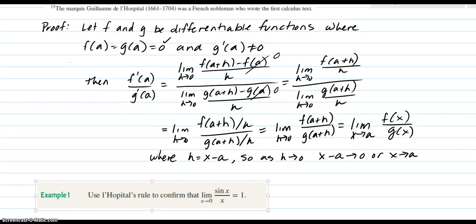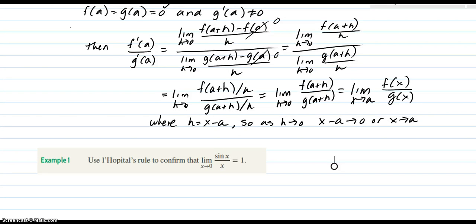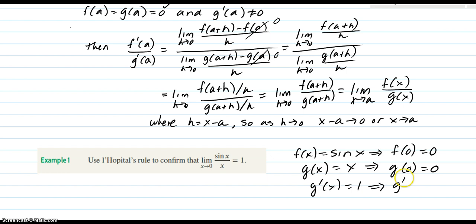So now we can go back and confirm all of our limits that we found in the first chapter without using a graph or a table, like for instance this one. So if we look at that, it does meet the conditions, because f(x) is equal to sin(x). And we know that f(0) is sin(0), which is 0. g(x) is equal to x. And g(0) is 0 as well. g'(x) is 1, and the derivative of 0 is not 0. All good.